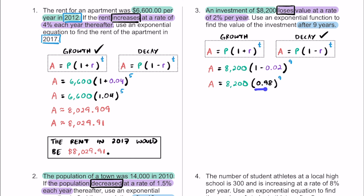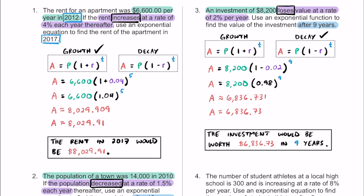We use a calculator: do the power first, then multiply by $8,200. We're talking about money, so we round to the nearest thousandths place first, then to the hundredths for pennies. Plugging this into a calculator, the investment after nine years is worth about $6,836. Looking at the decimal places, I'm getting 7, 3, and then 1 — that 1 tells the 3 to stay the same, so it's $6,836.73. In conclusion, after nine years, the initial investment of $8,200 would be worth $6,836.73.